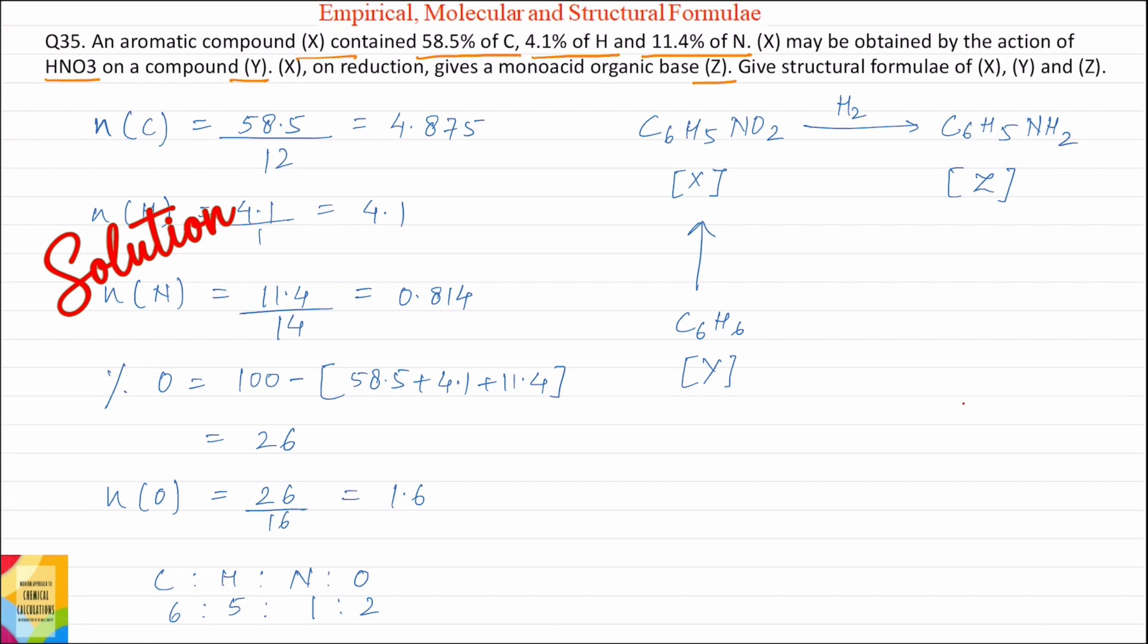First of all, moles of carbon, moles of hydrogen, moles of nitrogen. Find out moles of carbon - percentage of carbon divided by atomic weight of carbon which is equal to 4.875.